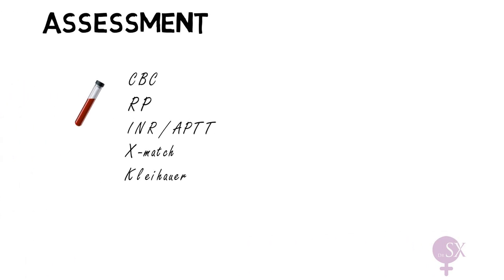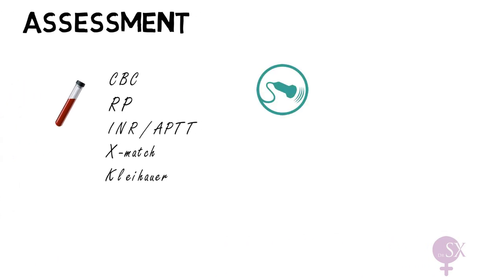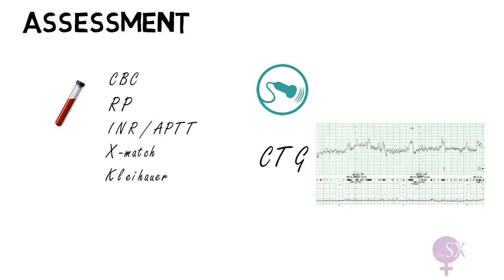Next we perform an ultrasound to check fetal growth and look for other causes of APH such as placenta praevia. Note that a placental abruption is not always visible on ultrasound. Most importantly, we need to check for fetal distress, so we perform a CTG.